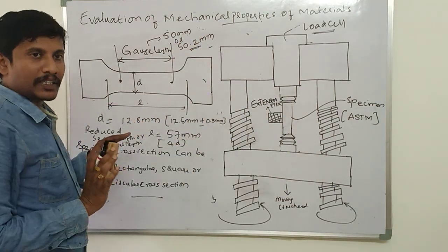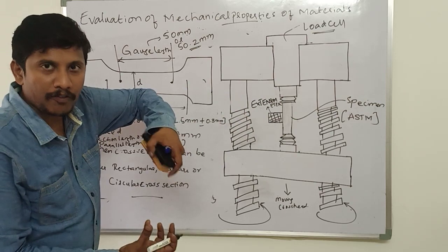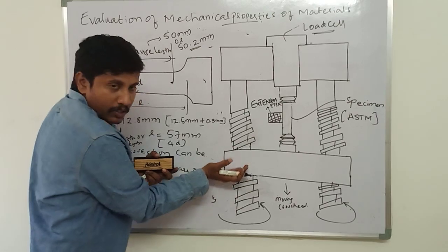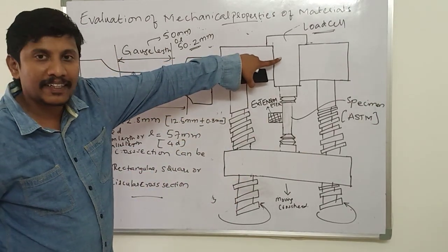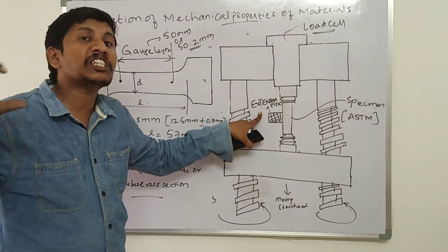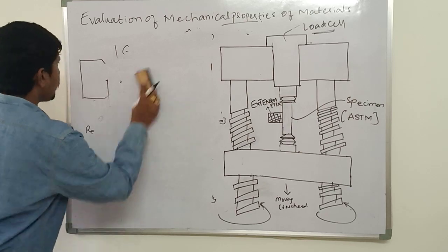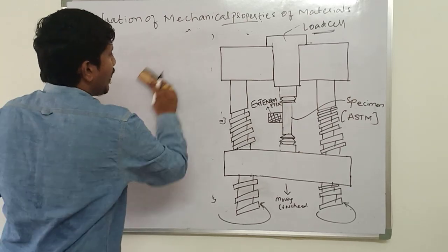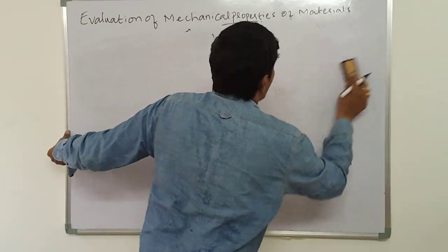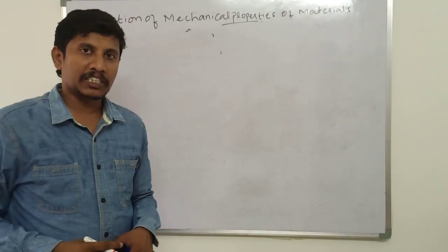A specimen as per the ASTM standards of these dimensions is prepared and gripped between the two heads of the universal testing machine. One head is moved down under progressively increasing load, measured with the load cell, and extension is measured with an extensometer or strain gauge.